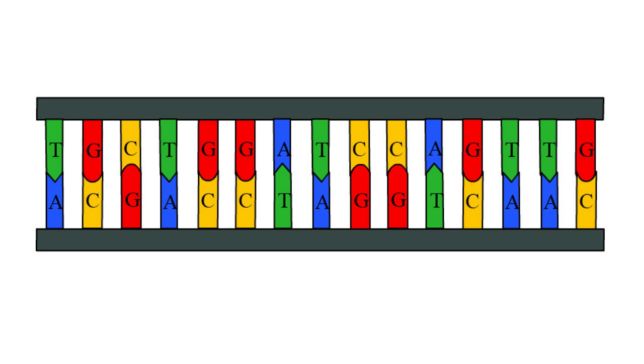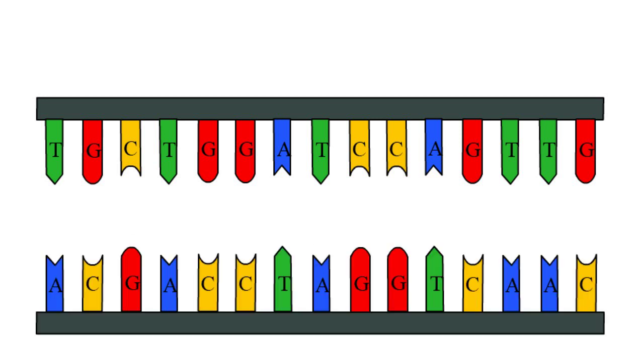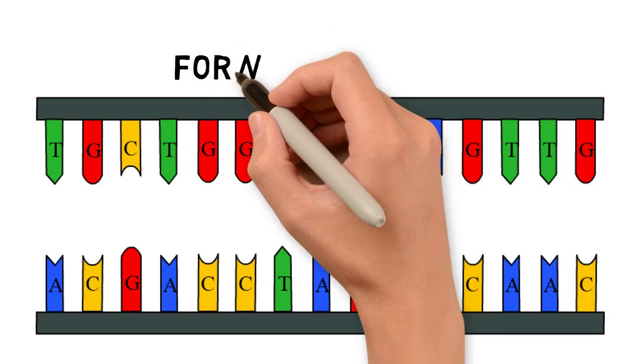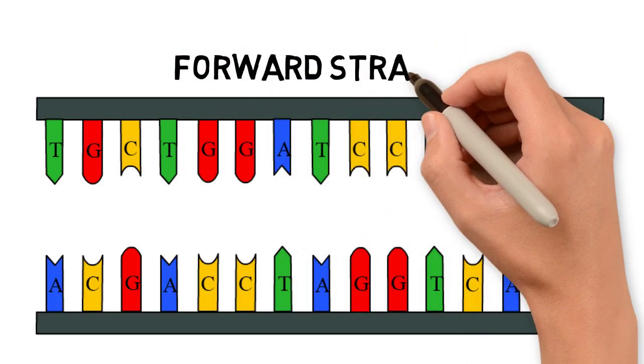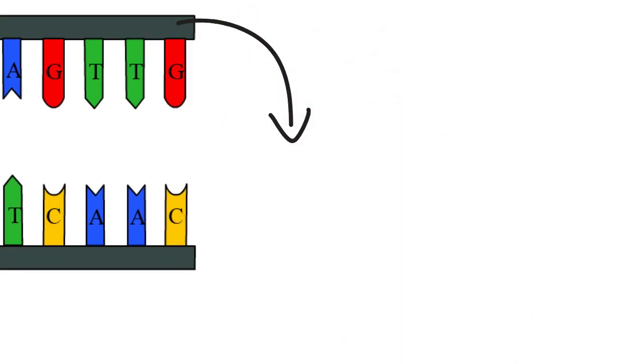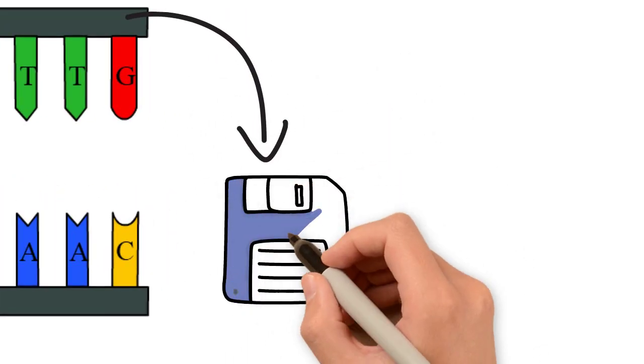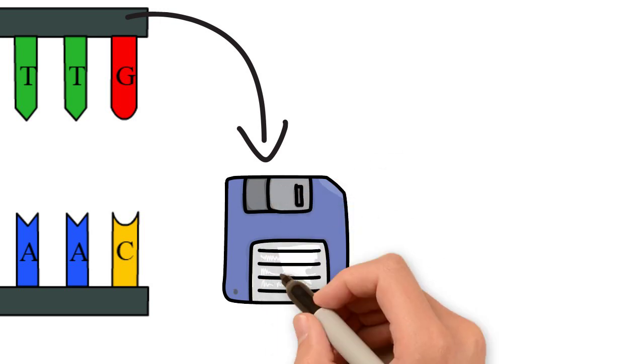In most DNA sequence databases, in order to save some space, only one of the strands is stored. It is usually called the forward strand. This is not a problem since we can easily reproduce the missing strand based on the complementary base pairs.